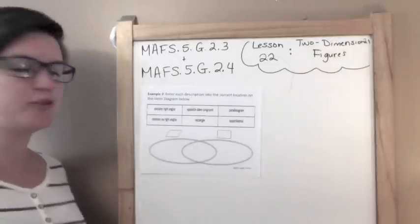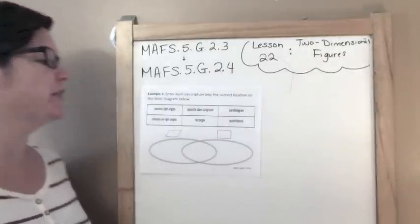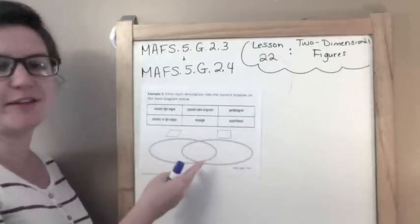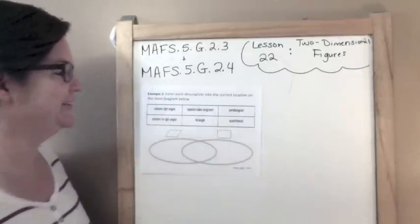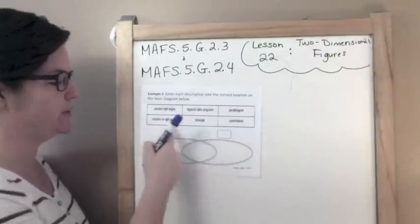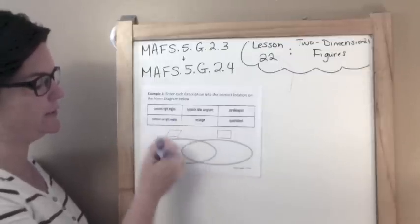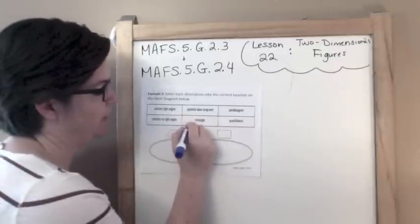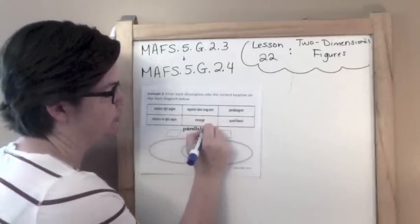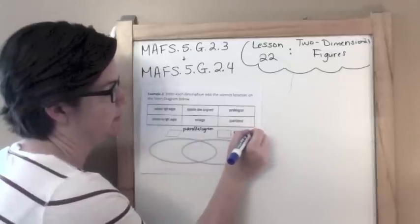Example two says enter the description into the correct location on the Venn diagram. For those of you who have never been to school in your whole life, this is a Venn diagram. So here we have the descriptions, and we're gonna put them up here. This side is longer than this side, so this right here would be a parallelogram. And this is my rectangle.